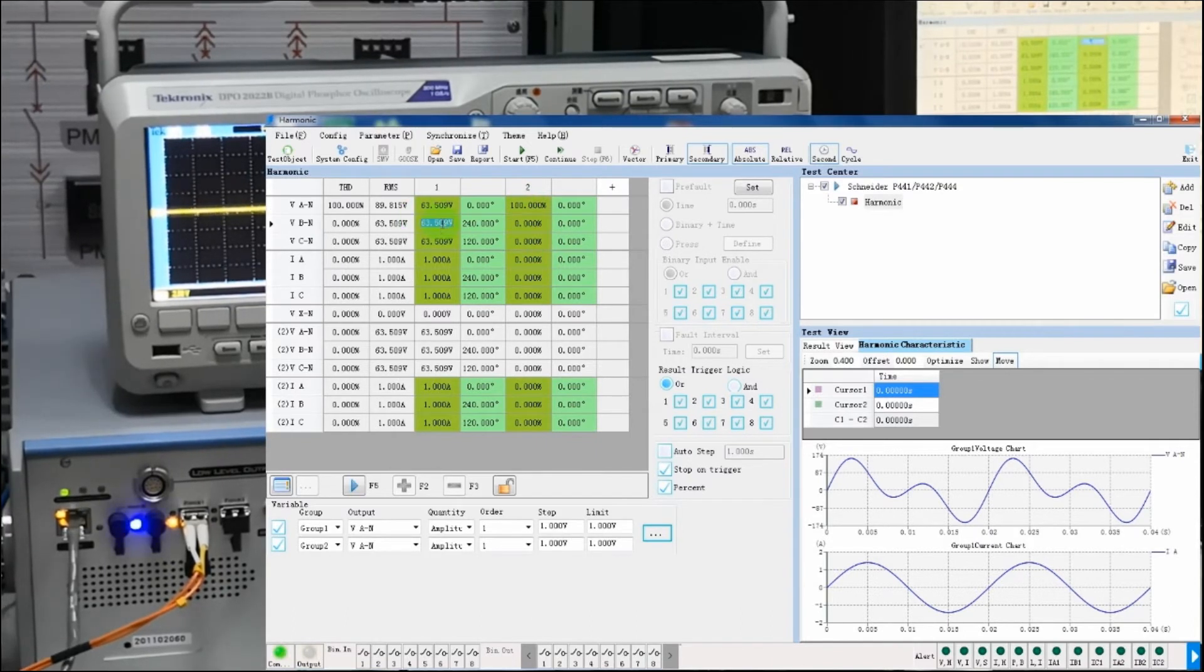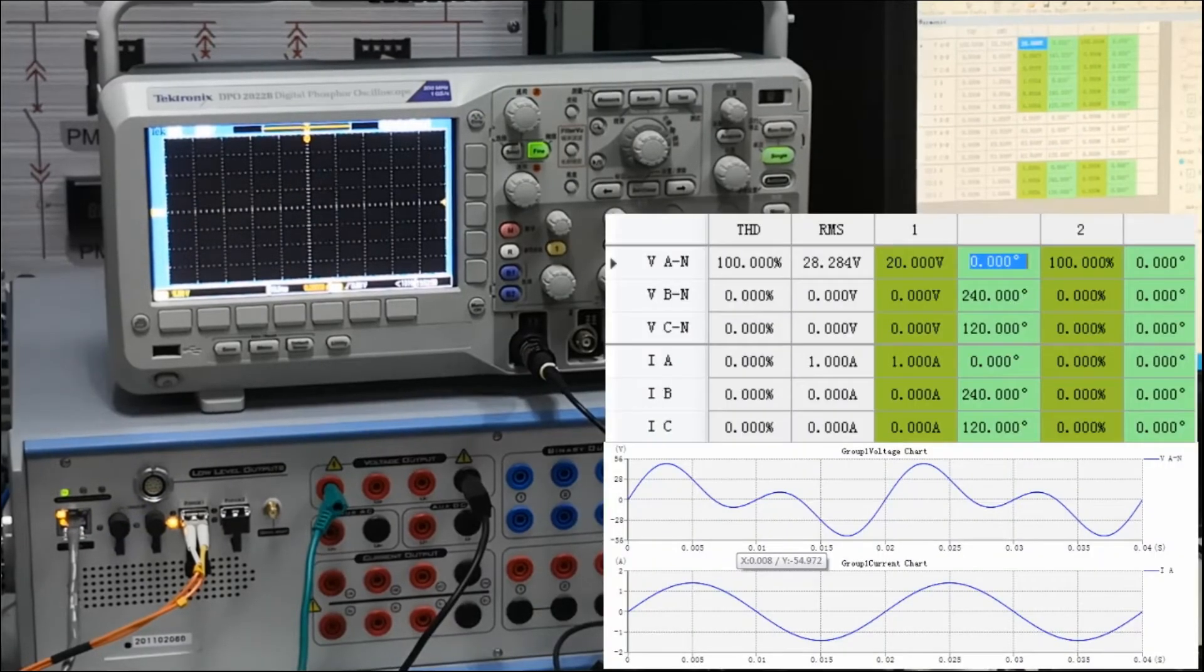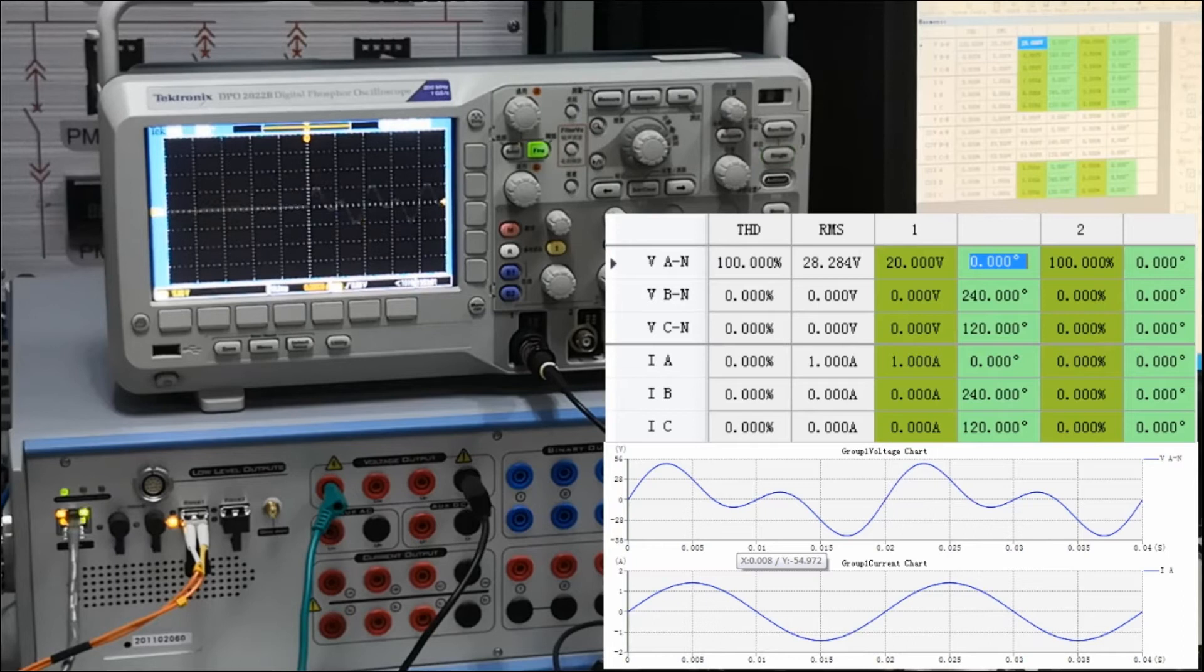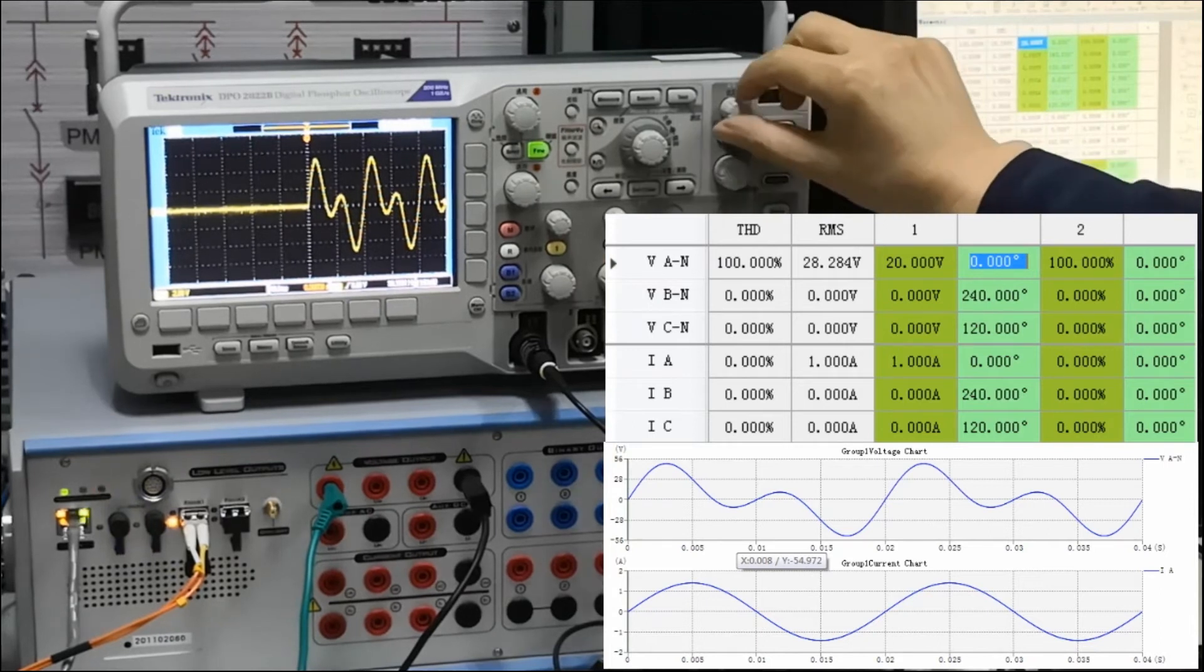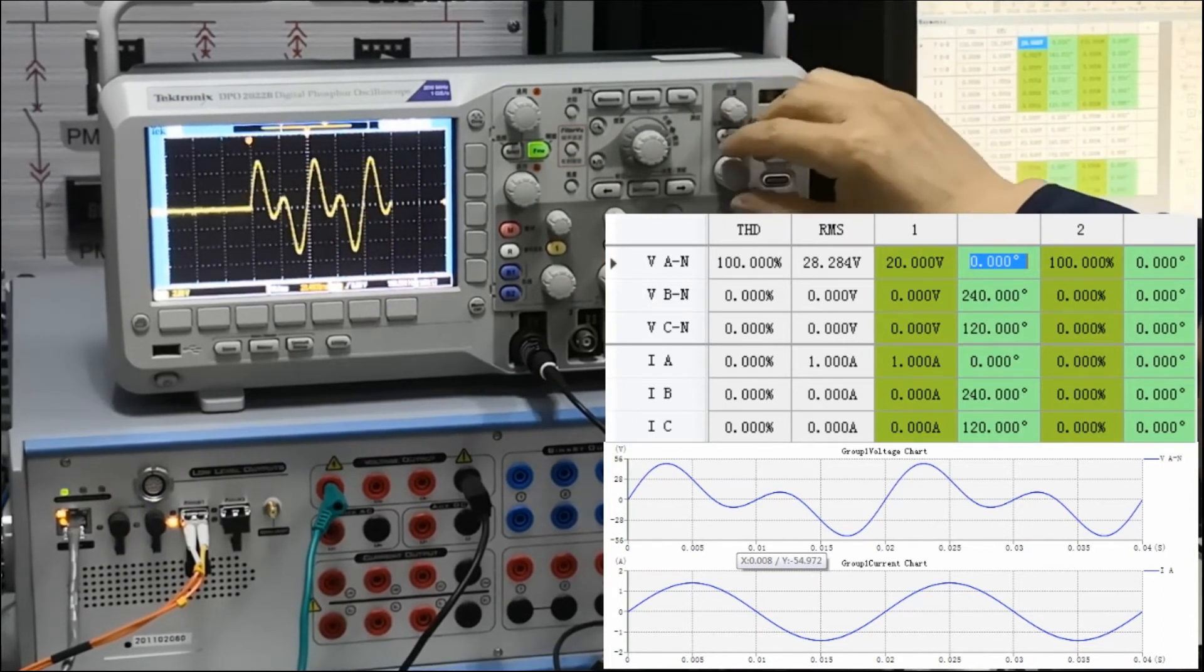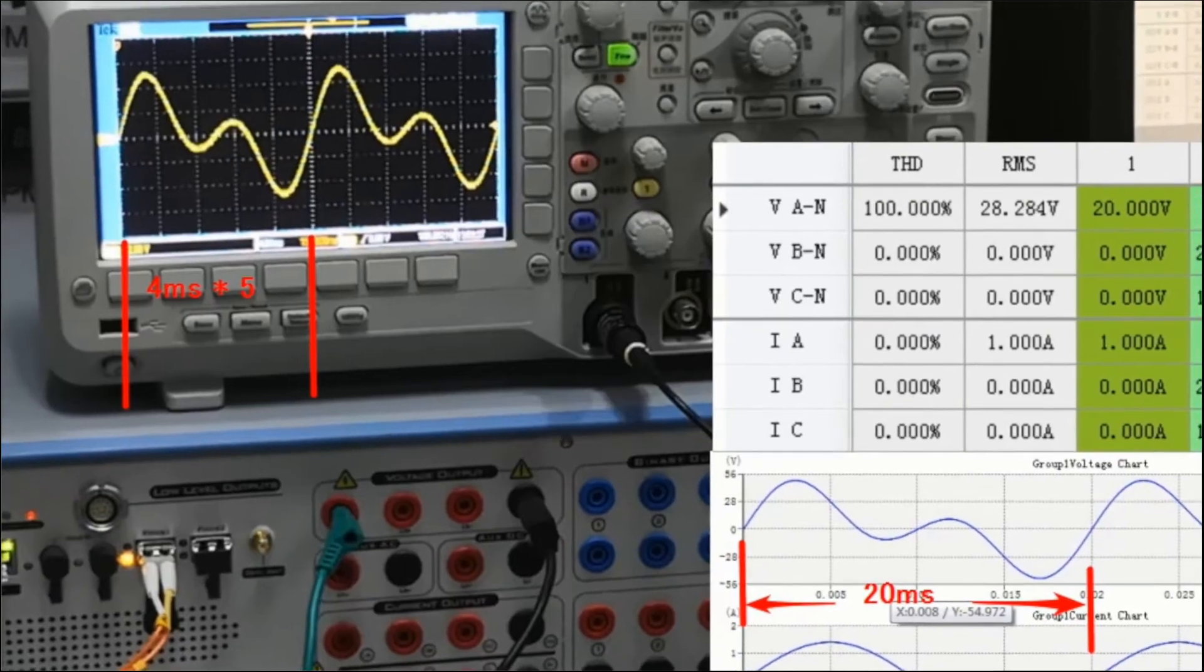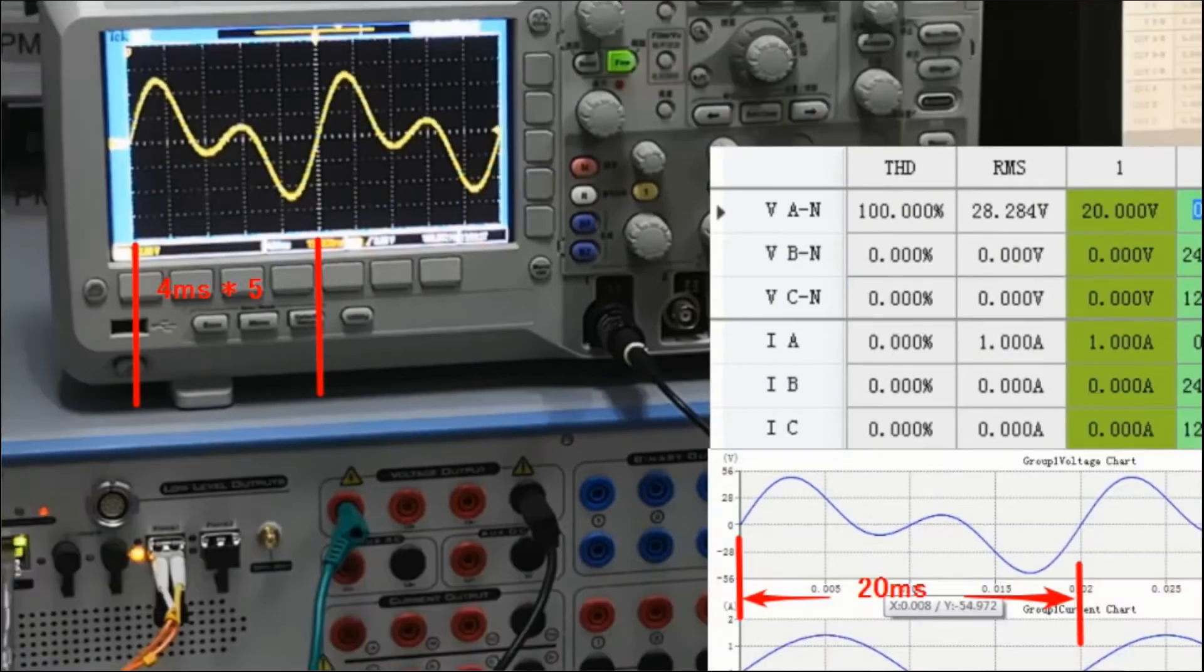Now we have just added VAN on second harmonic constant of 100%. And you can see that waveform of VAN has changed. If we analyze the waveform in oscilloscope on X axis, each dimension corresponding to 4 ms.